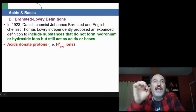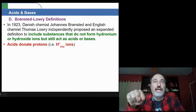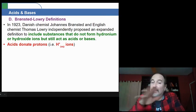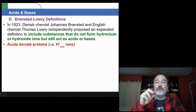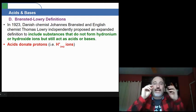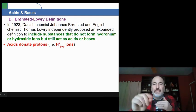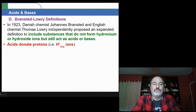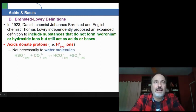So there were a couple of scientists in 1923, same year, a Danish chemist by the name of Johannes Brønsted and an English chemist named Thomas Lowry independently proposed an expanded definition. So they both get naming rights, as it were. So the Brønsted-Lowry definitions basically take into account to include substances that do not form hydronium or hydroxide ions, but still act as acids or bases. So according to them, acids donate protons. It doesn't have to be to water. As long as something that loses an H+ ion to something else, that counts as an acid.